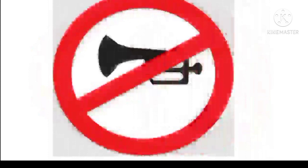This symbol represents horn-prohibit. The sign directs the driver to respect the silence in zones of hospitals, schools, etc. It is a silence zone — do not use the horn.